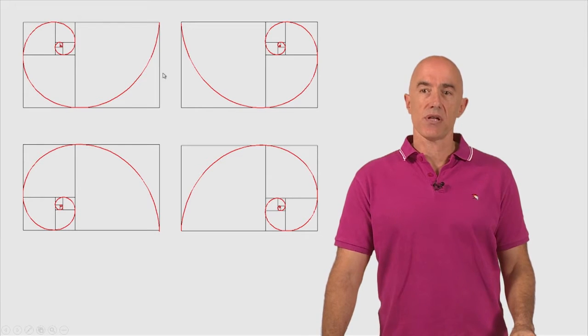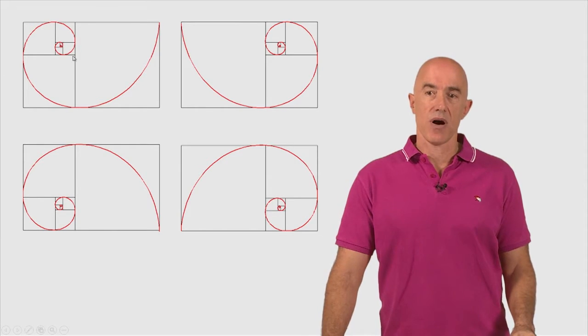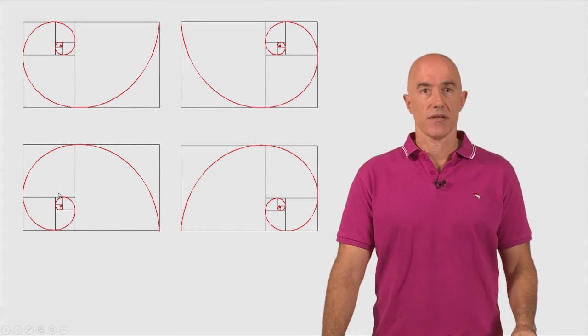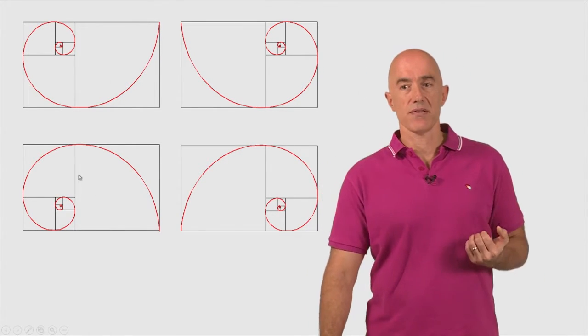So the spiral here goes clockwise. And the spiral on the lower curve goes counterclockwise. So those are two possibilities.